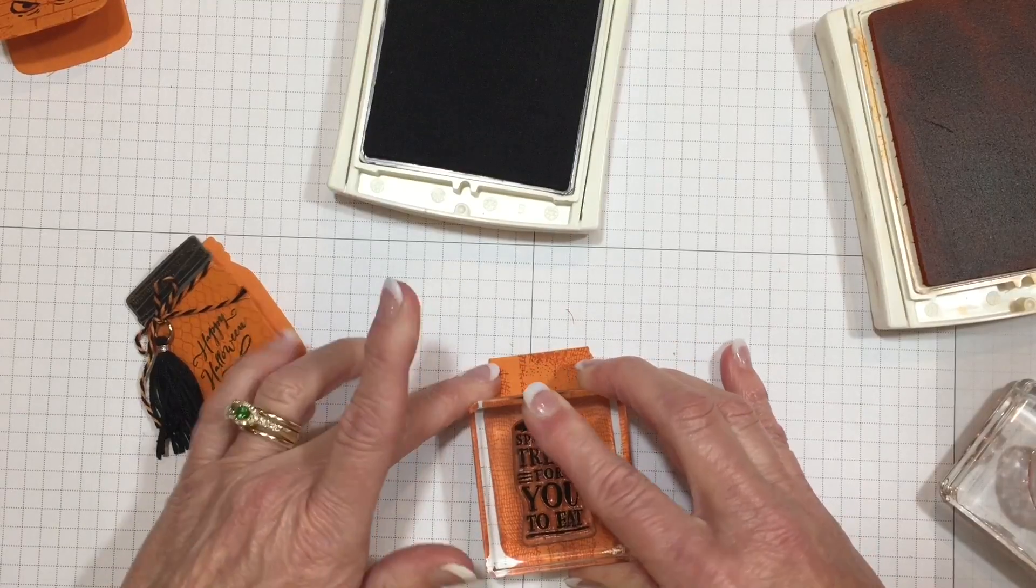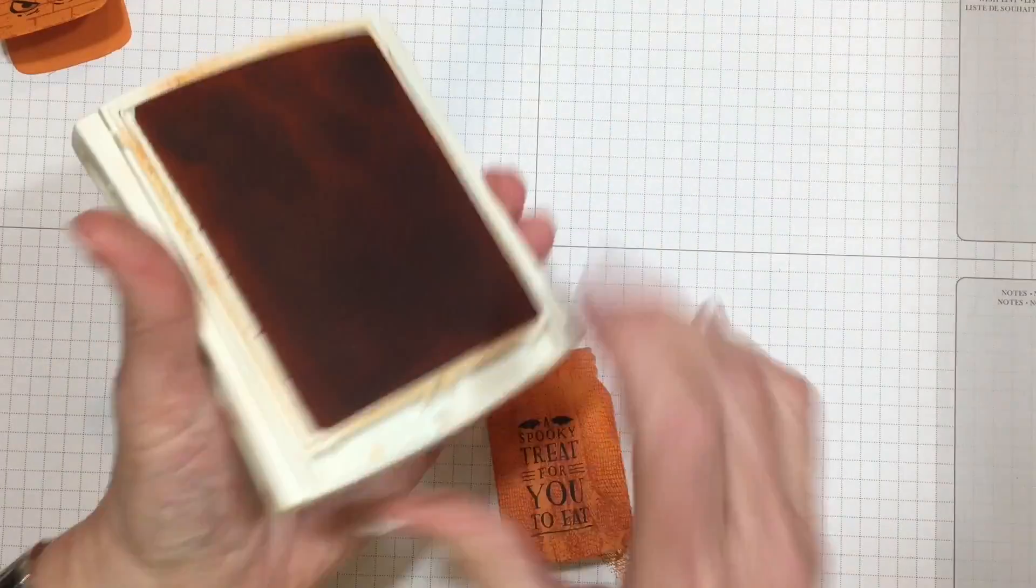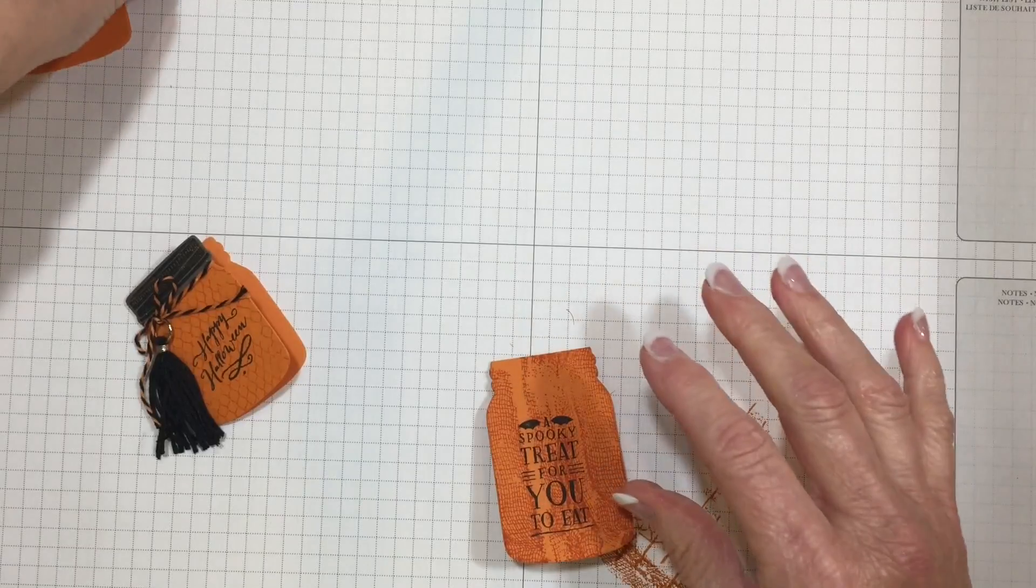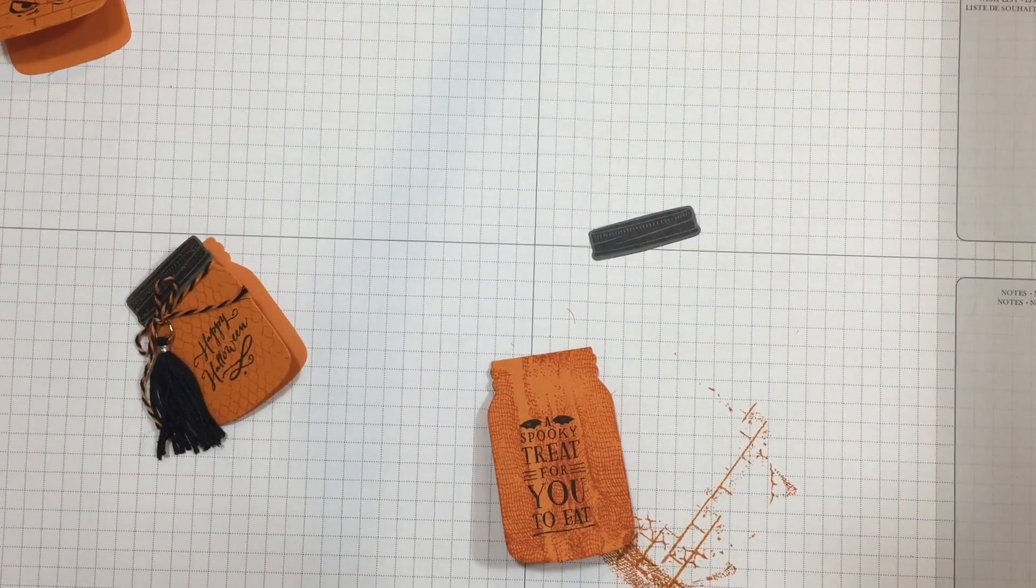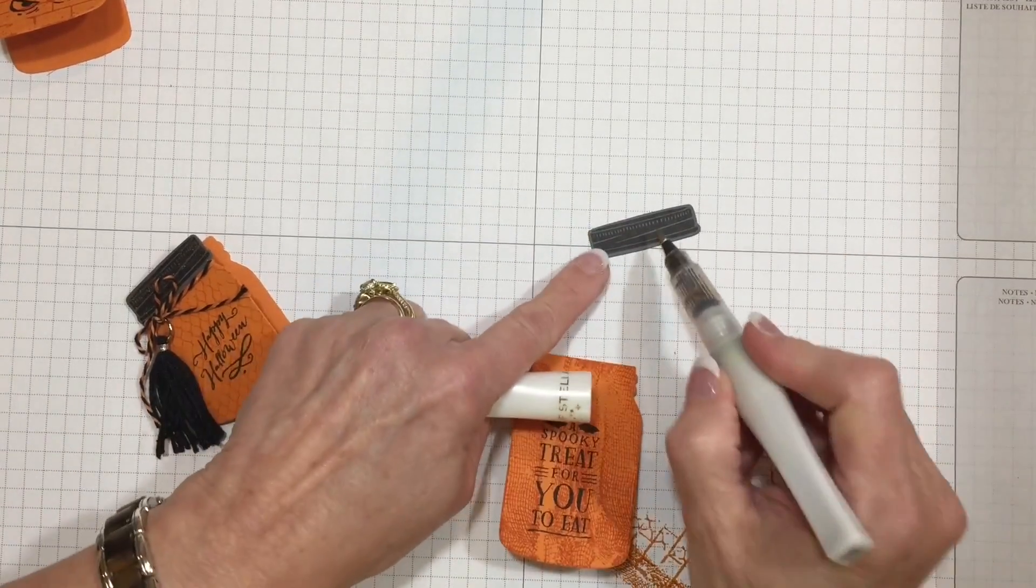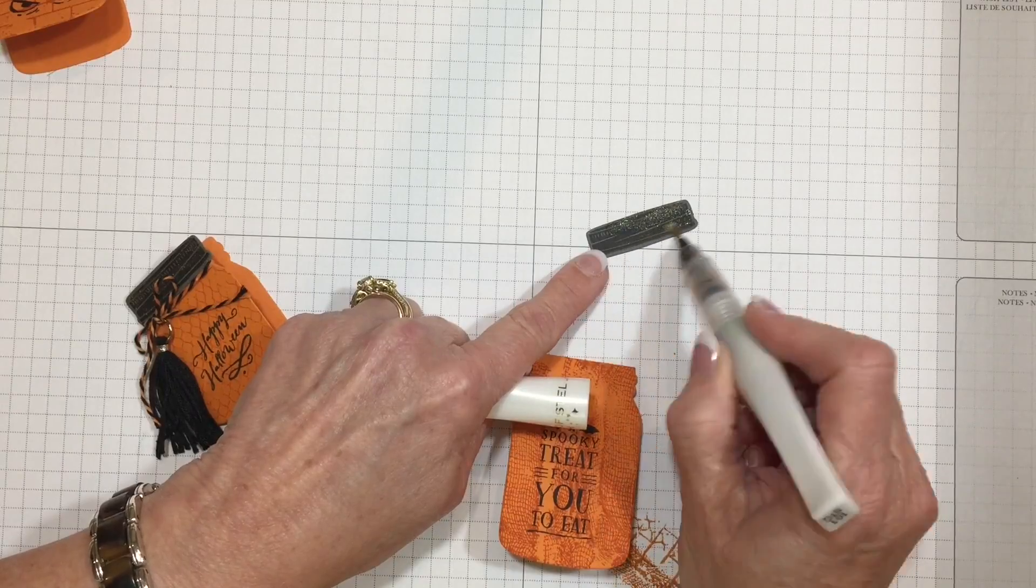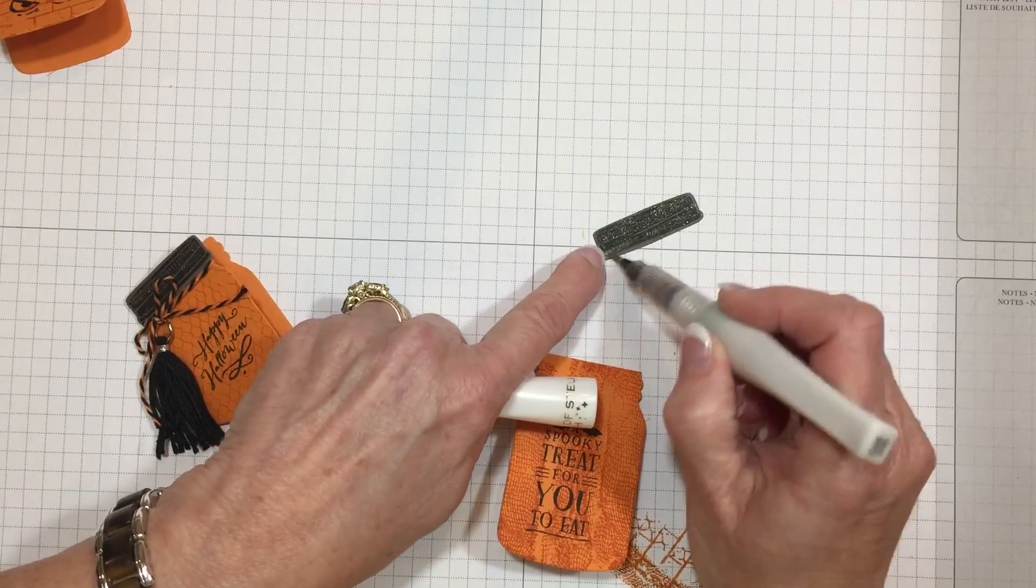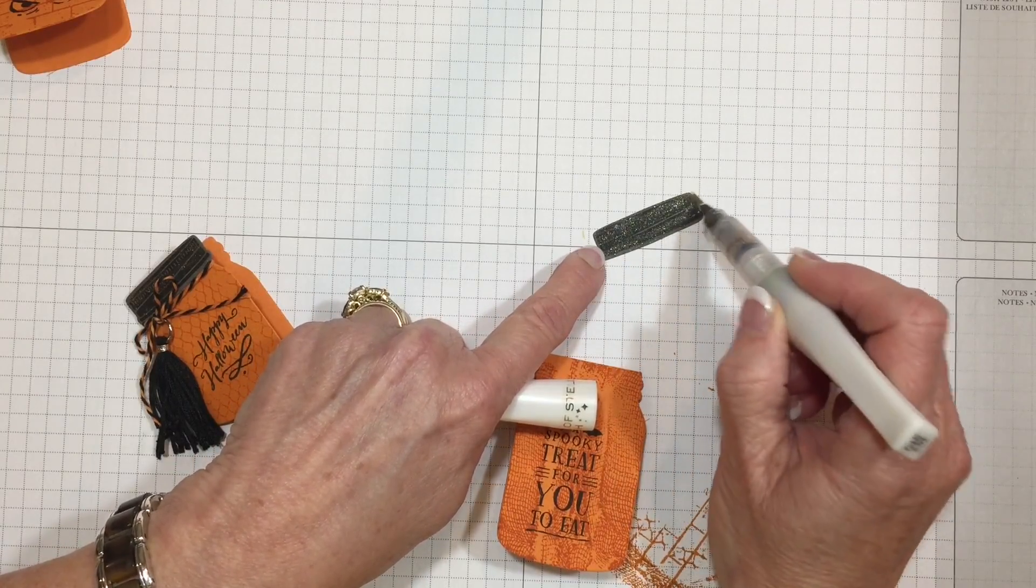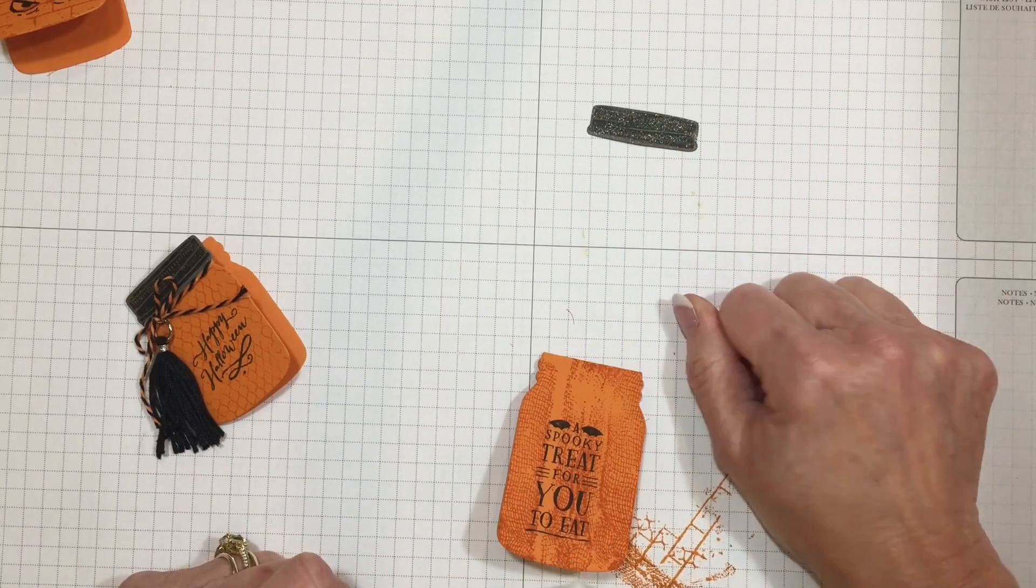Now to finish it up, we're going to add the jar lid. You're probably going to want to take your lid and use the gold shimmer Wink of Stella brush. We're just going to glitterize this—it makes it kind of shiny and glittery. We do want this to dry for just a few minutes, so we're going to scoot it aside and let it dry.